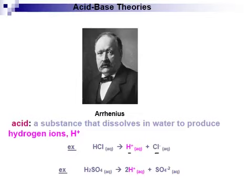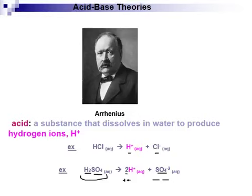This equation needs to balance — on the left side we have two hydrogens, so that's why we need the coefficient two in front to give us two hydrogens, and one sulfate on each side. Notice that the charge is also balanced: sulfuric acid has no charge on the left, and on the right two positives and two negatives neutralize each other, giving a net charge of zero.